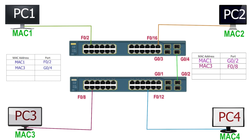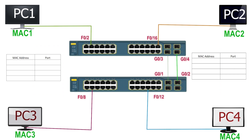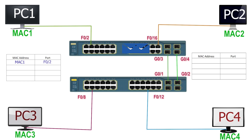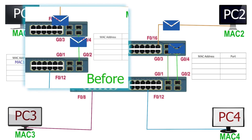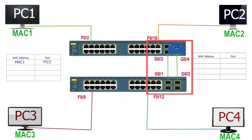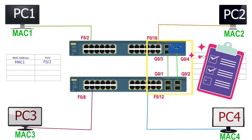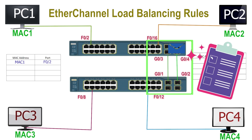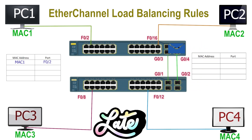After EtherChannel configuration, switches assign MAC addresses to the EtherChannel instead of individual interfaces. Suppose we configure an EtherChannel on these switches. PC1 generates a frame for PC3, which reaches S1 on F0-2. S1 adds an entry for MAC1 and forwards it from all ports besides the incoming port. Now the switches have an EtherChannel, and the EtherChannel will decide which port will forward the frame using load balancing rules, which we will discuss a bit later.